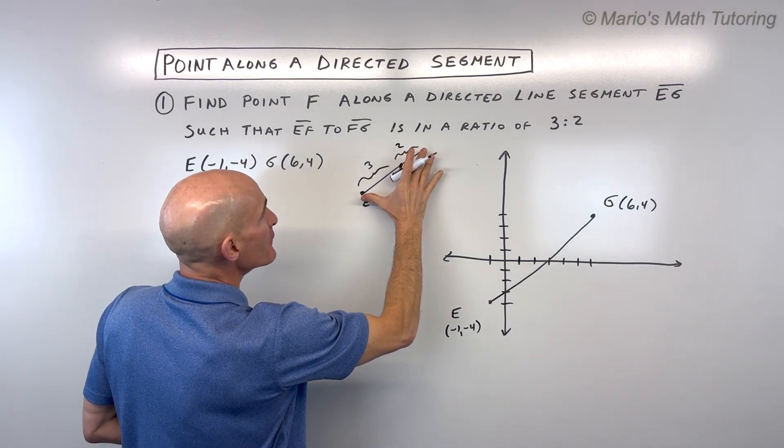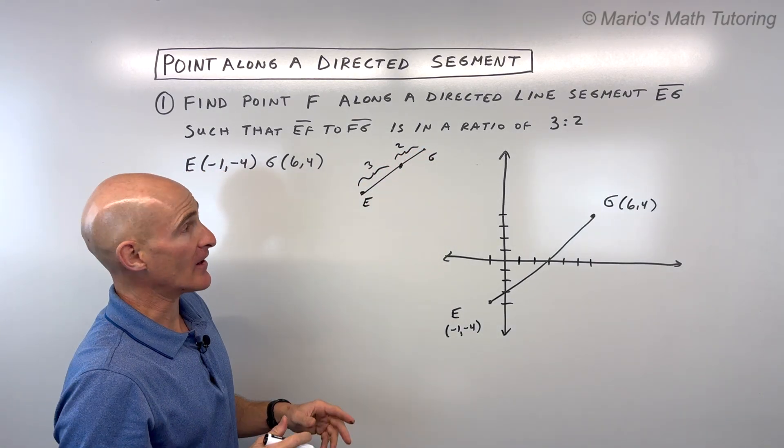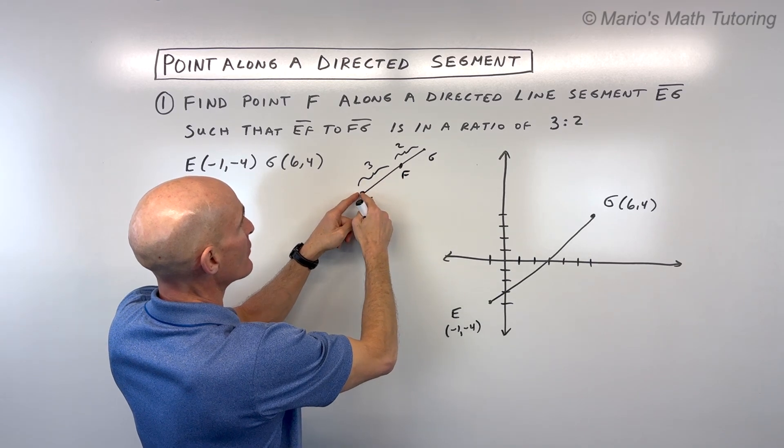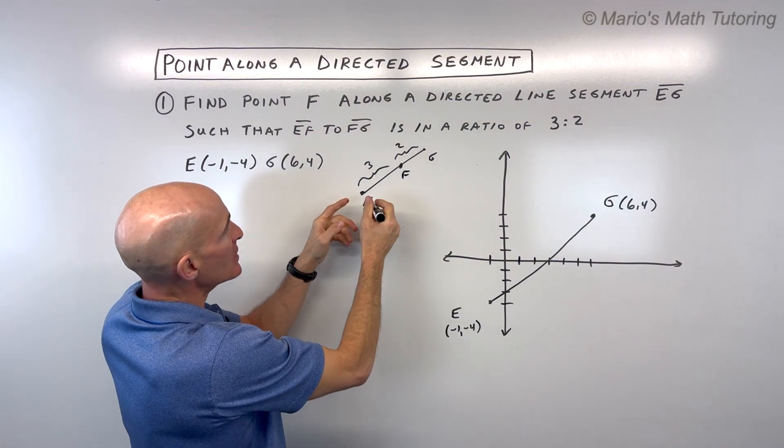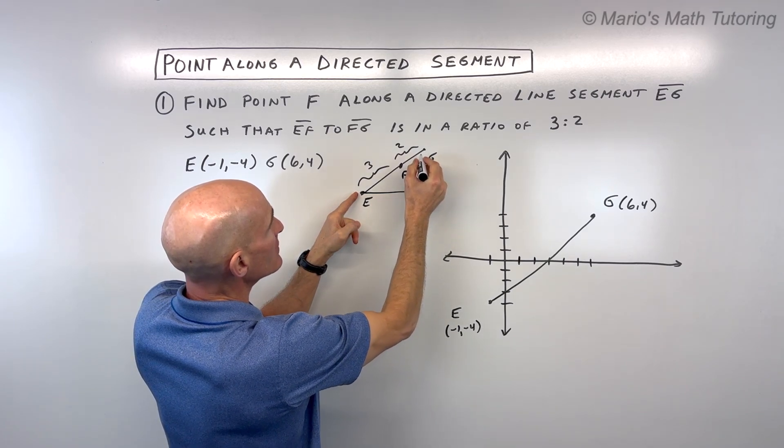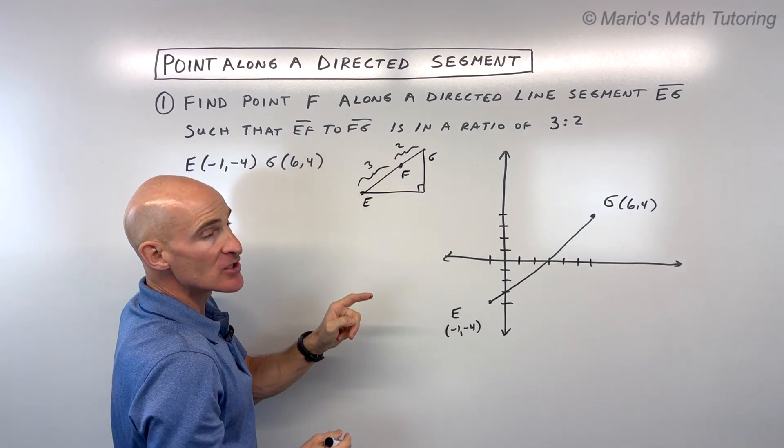So if we think about it like this, this is like three-fifths of that whole length. See if this is your point F, it's like three-fifths. Now what we're going to do is we're going to divide this up into like a horizontal component and a vertical component. So let's go ahead and do that.